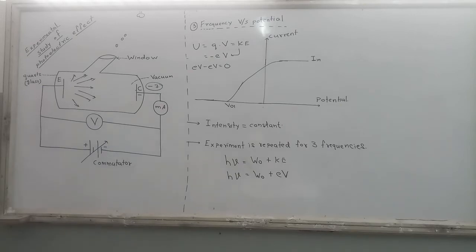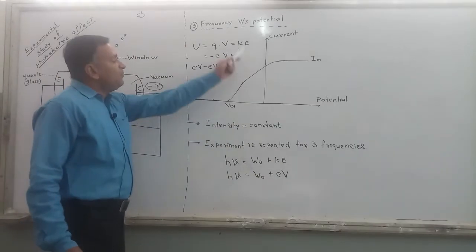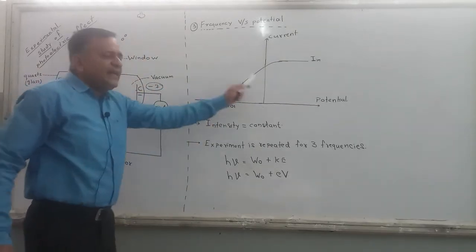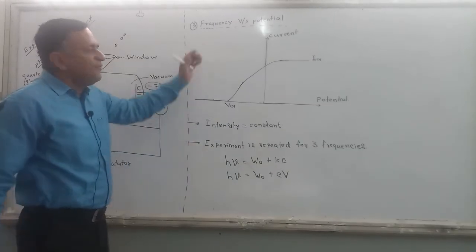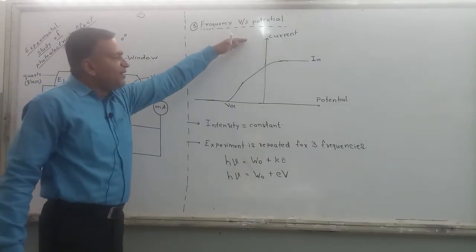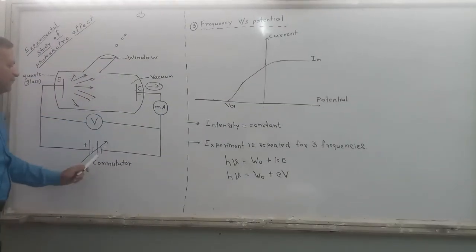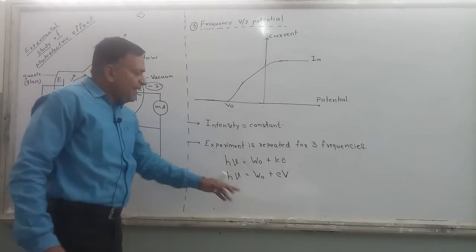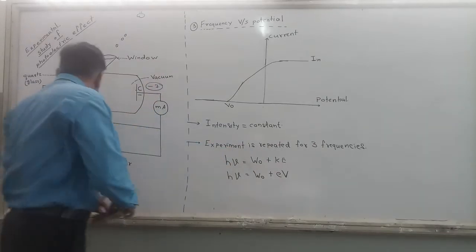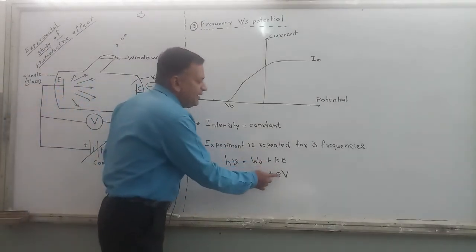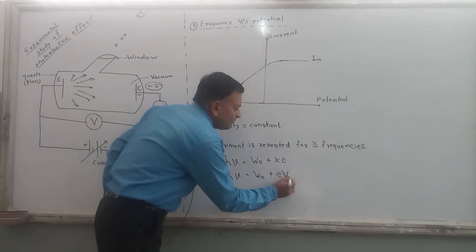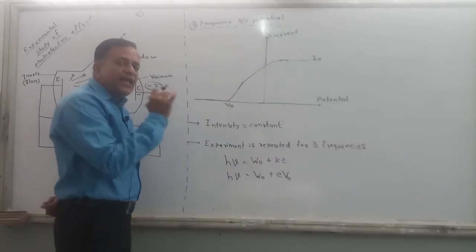To stop the electron coming out of the emitter from reaching the collector, we have to give the stopping potential to the electron, and that stopping potential comes from this logic. This graph of current versus potential difference — the stopping potential is V₀. If the electron has kinetic energy equal to eV, then the energy required to stop that electron will be eV₀.